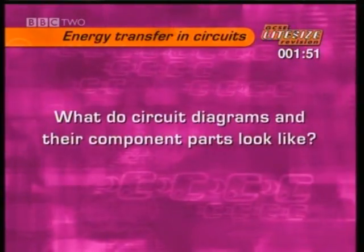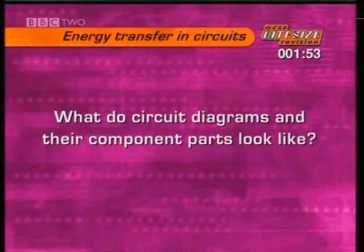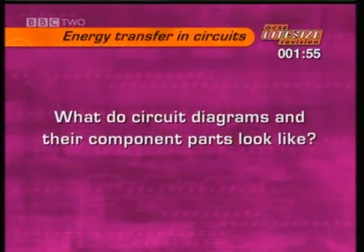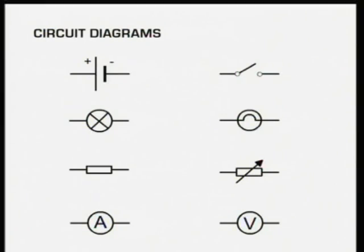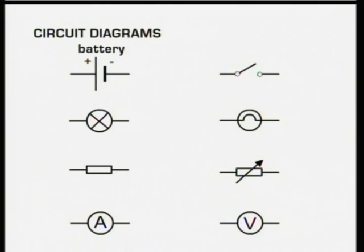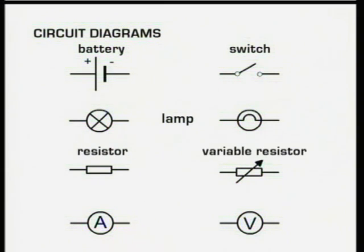Here's a quick reminder of what circuit diagrams and their component parts look like. These are some of the standard symbols used in the electrical circuits you might see in your exam. You'll also need to use them yourself if you're asked to draw a circuit diagram. They are a single cell battery, a switch, two symbols for a lamp, a fixed resistor and a variable resistor, and an ammeter and voltmeter.